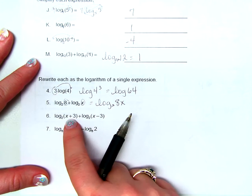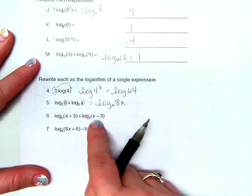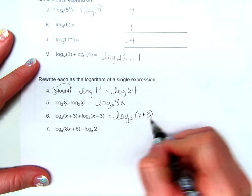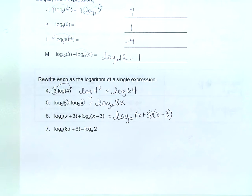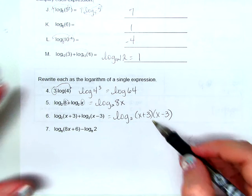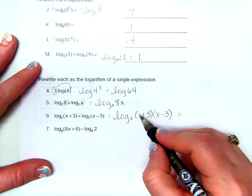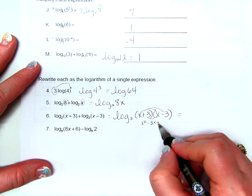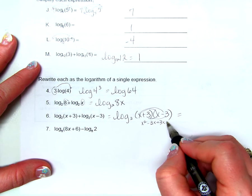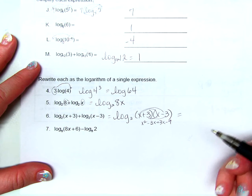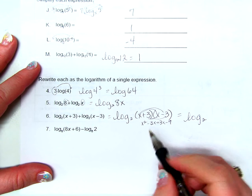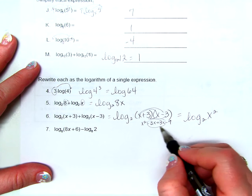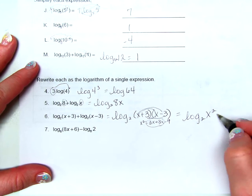Log base 2: again, adding both logarithms means multiplying their arguments — log base 2 of x plus 3 times x minus 3. Don't be confused and think those cancel — we're multiplying here. That gives x squared, negative 3x, positive 3x, and negative 9. Simplifying, we get log base 2 of x squared minus 9.